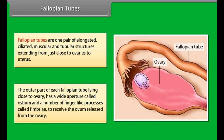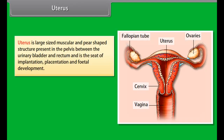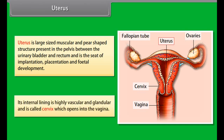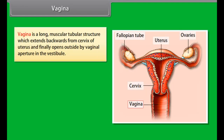The female germ cells or eggs are made in the ovaries, which are also responsible for the production of some hormones. The human female reproductive organs are ovaries, fallopian tubes, uterus, and vagina. Ovaries are the primary sex organs of females — one pair, small-sized, almond-shaped, and whitish structures present in the pelvis of the abdomen. Internally, each ovary contains a large number of immature primary or ovarian follicles.